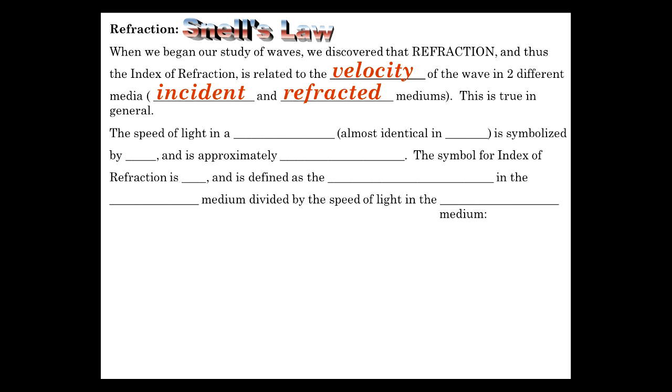The speed of light in a vacuum, which is almost the same thing as in air, is symbolized by C. The value of the speed of light is a constant in a vacuum, a specific constant which is real close to 3 times 10 to the eighth meters per second, 300 million.